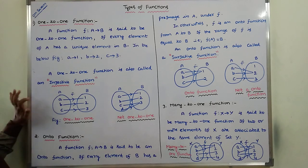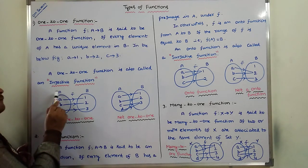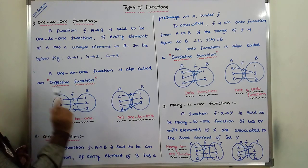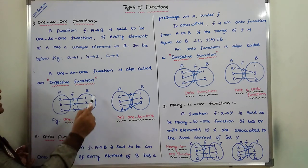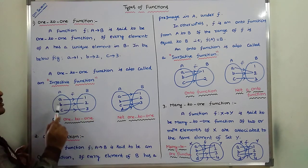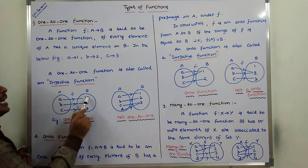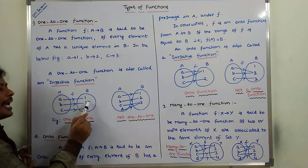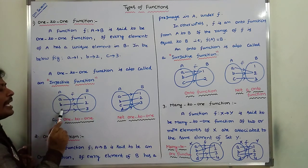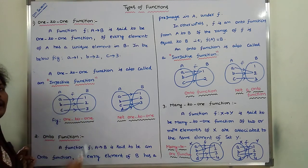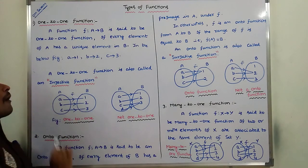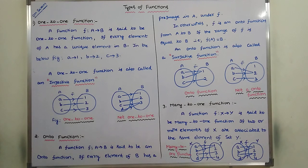Hence we can say that f is a one-to-one function. Every element of set A — that is a, b, c — has a unique element in set B — that is 1, 2, 3. So a has a unique element 1 in set B, b has a unique element 2 in set B, and c has a unique element 3 in set B. This type of function is called a one-to-one function.